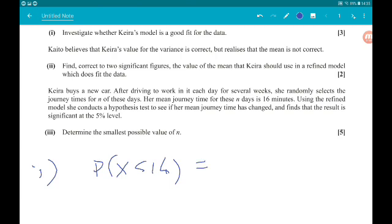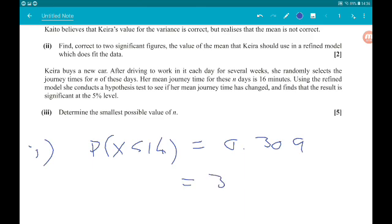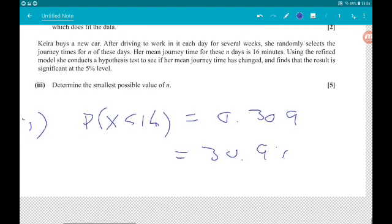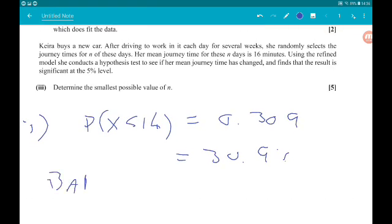Now again, we can do this on our calculators. So you need to go into distribution, normal, cd. For the lower bound, we're going to put in 0. That journey time can't take less than 0 minutes. For the upper bound, we're going to put in 14. Sigma is the square root of 4, so 2, and mu is 15. So we should get this probability to be 0.309, which is 30.9%. Now that is a bad fit with what she's noticed, so 7%. So so far, the model is pretty bad.